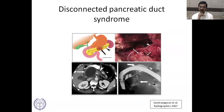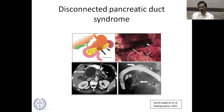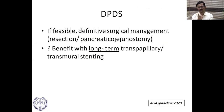Disconnected pancreatic duct syndrome occurs when, due to severe damage, the continuity of the pancreatic duct is lost. All secretions pour out into the adjoining tissues, leading to persistent collection. On ERCP, the pancreatic pancreatogram stops short, with contrast accumulating at the point of disruption. Treatment is generally surgical — either resection or pancreaticojejunostomy. ERCP-based transpapillary or transmural stenting can be tried but requires long-term stent placement.